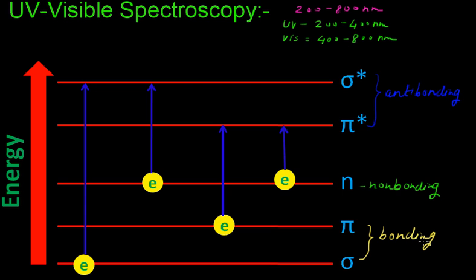When molecules get exposed to UV-visible radiation, bonding and non-bonding electrons transfer from the ground state to excited state, that is, anti-bonding molecular orbitals.